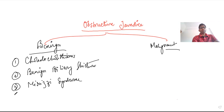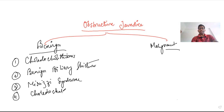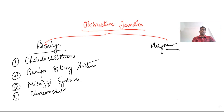The fourth benign cause is the congenital anomaly known as a choledochal cyst. Though choledochal cyst is kept in the benign category, it may be a predisposing factor for malignancy of the bile duct.